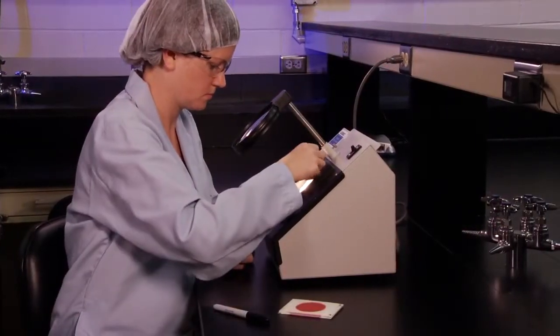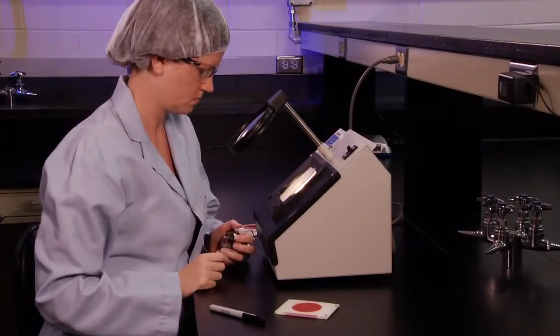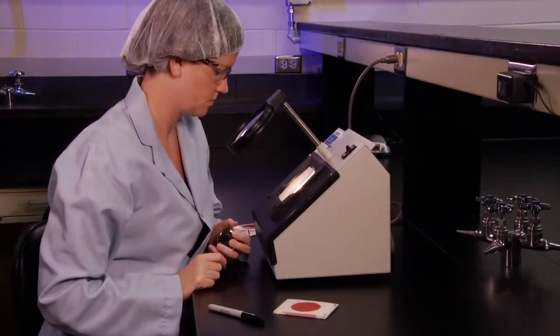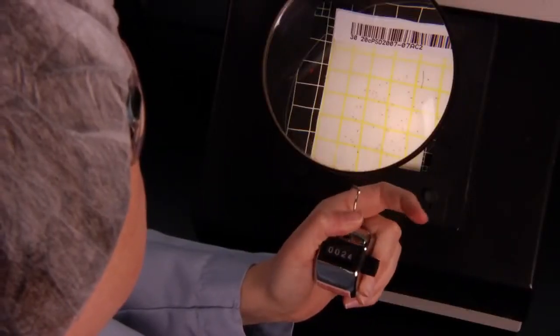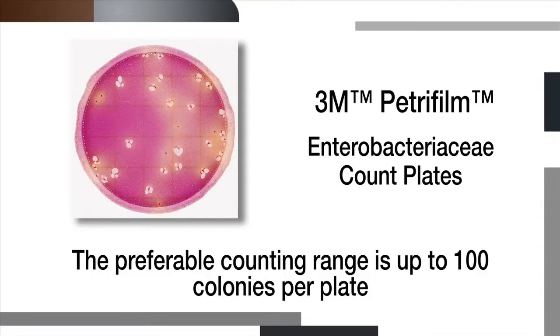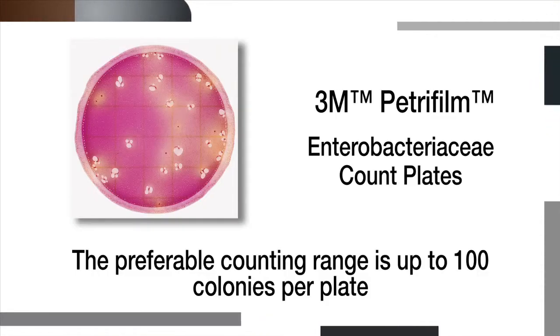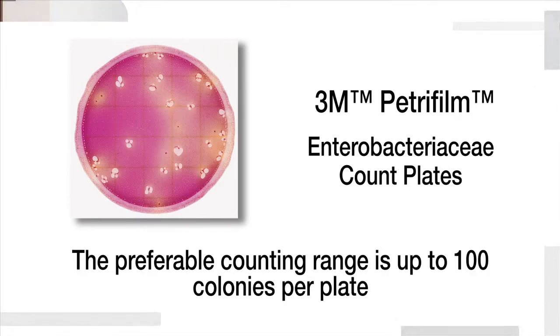Good lighting is necessary for accurate counting. An illuminated magnifier and a hand tally may help for counting bacterial colonies. The preferable counting range for the 3M PetriFilm Enterobacteriaceae count plate is up to 100 colonies per plate.